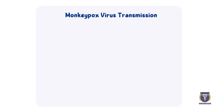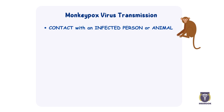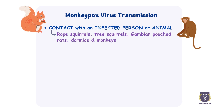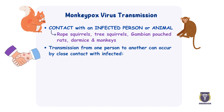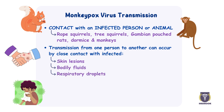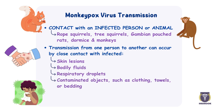Monkeypox virus can be transmitted by contact with an infected person or animal, including rope squirrels, tree squirrels, Gambian-pouched rats, dormice, and different species of monkeys among others. Transmission from one person to another can occur by close contact with infected skin lesions, bodily fluids, respiratory droplets, and contaminated objects such as clothing, towels, or bedding.